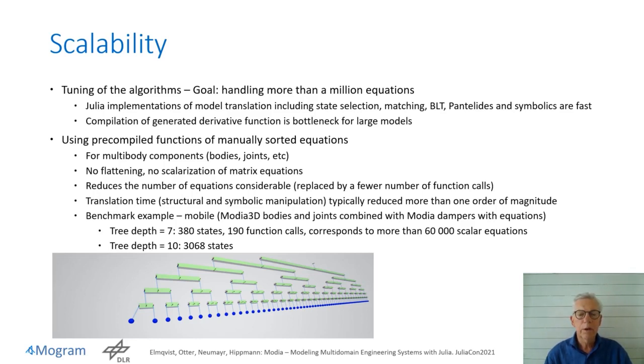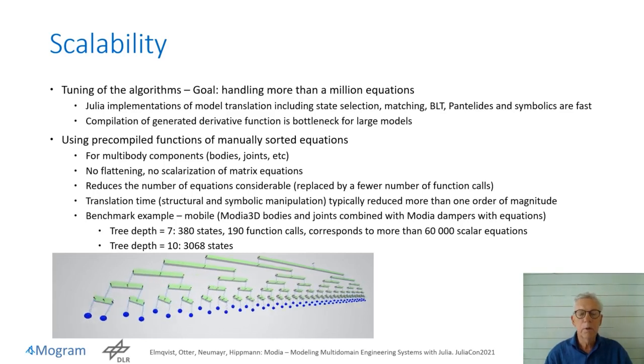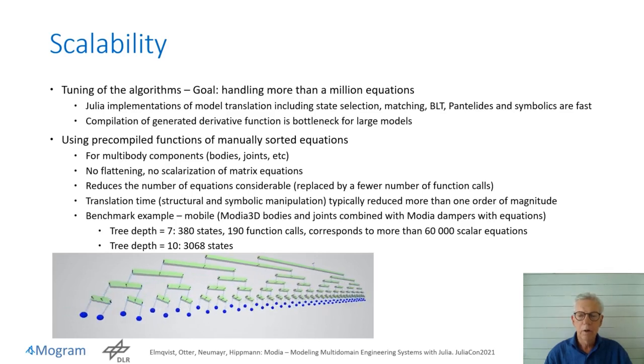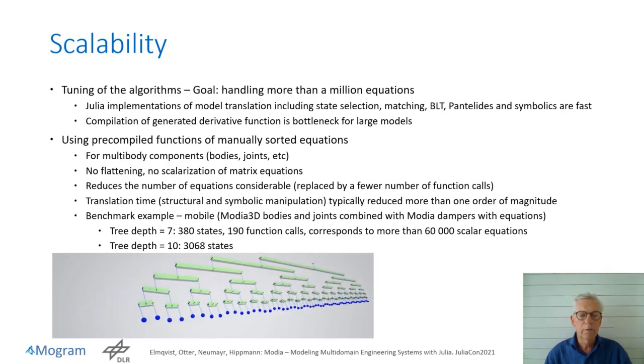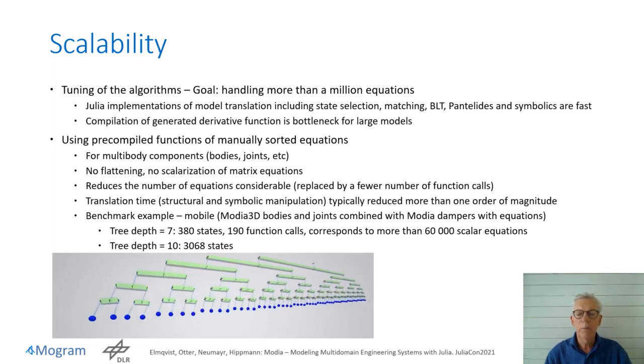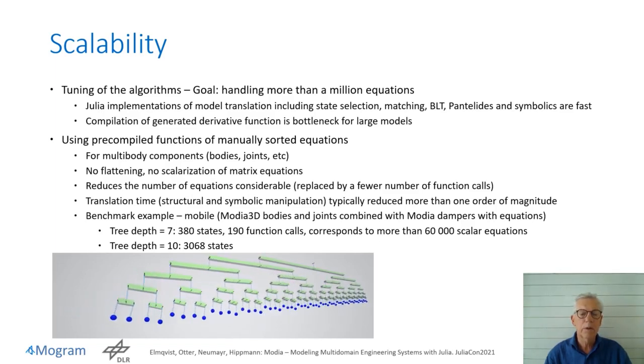We are using a recursive mobile as a benchmark model. It has Modja 3D bodies and revolute joints combined with Modja dampers with equations. The animation shows such a mobile with seven layers. There are 380 states. The generated code contains 190 function calls, one for each degree of freedom, which corresponds to more than 60,000 scalar equations.